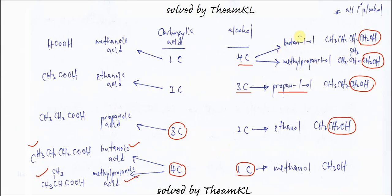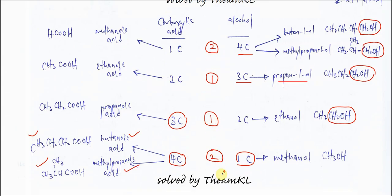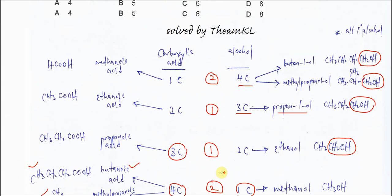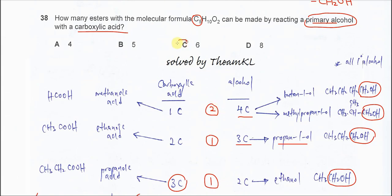So the total esters formed: the one-carbon acid case gives two esters, the two-carbon gives one, the three-carbon gives one, and the four-carbon gives two. The total is six esters, so the answer is C.